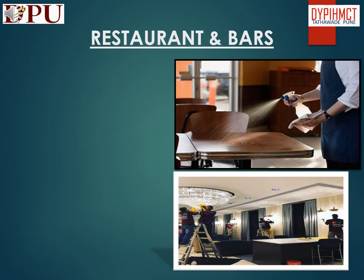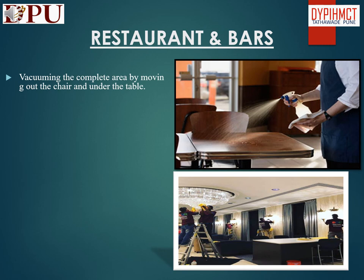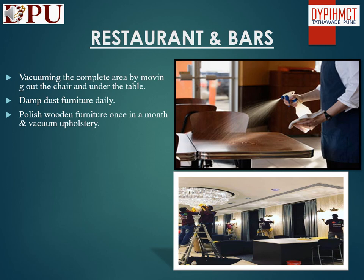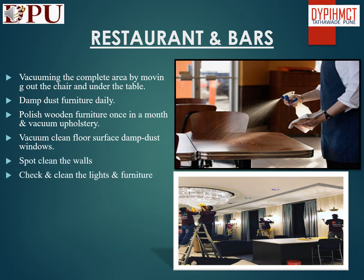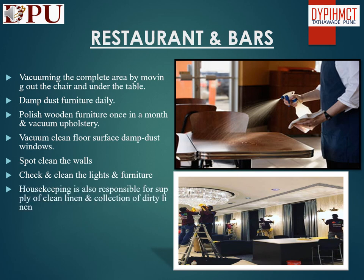In this slide we will discuss about cleaning of restaurants and bars. Tasks include vacuuming the complete area by moving out chairs and going under the tables, damp dusting furniture daily, polishing wooden furniture once a month and vacuuming upholstery, vacuum cleaning floor surfaces, damp dusting windows, spot cleaning the walls, and checking and cleaning lights and fixtures. Housekeeping is also responsible for supply of clean linen and collection of dirty linen.